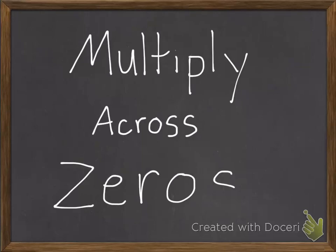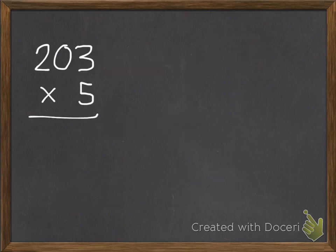This lesson will help you multiply across zeros. If we have a problem like 203 times 5...